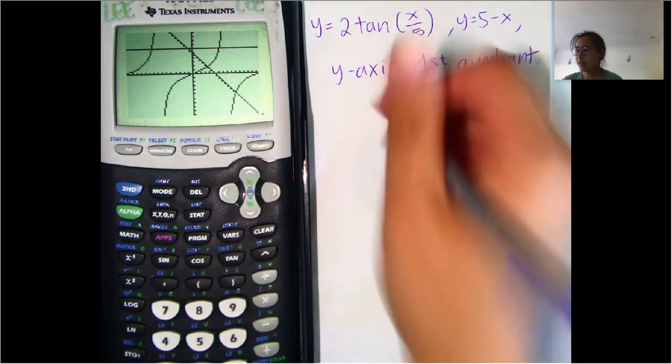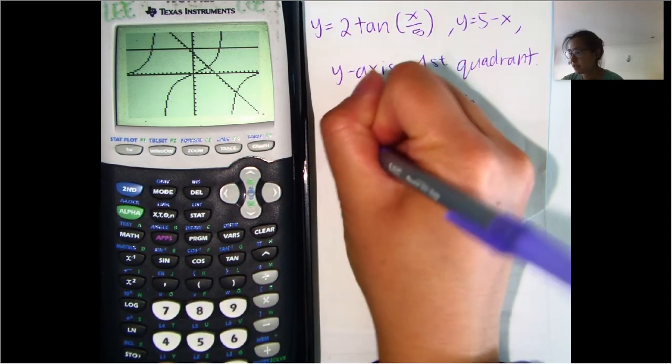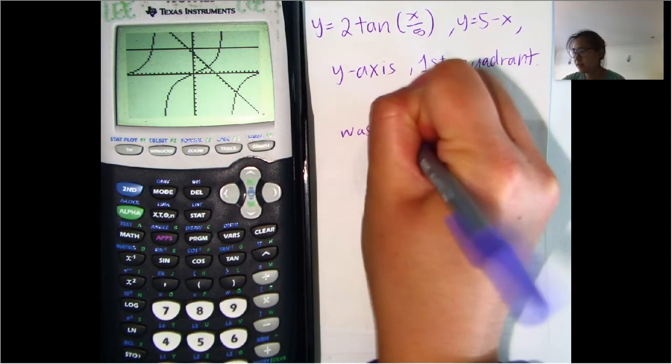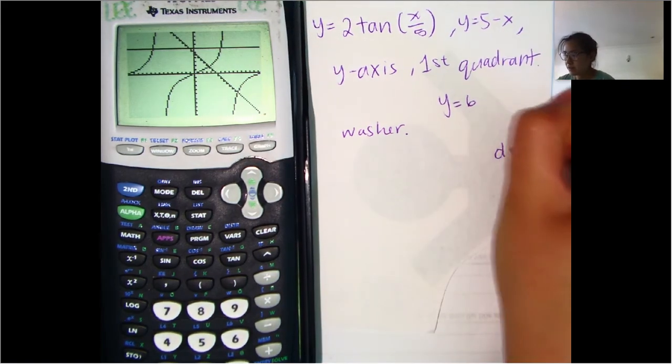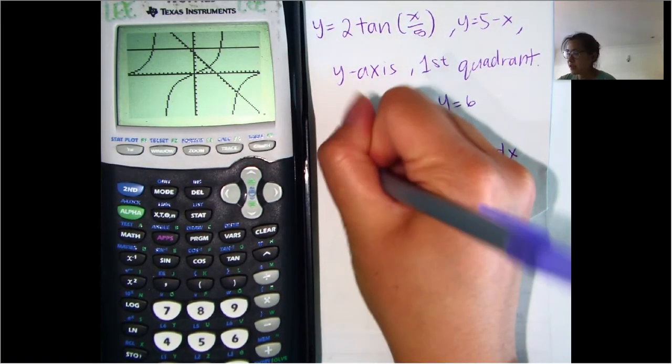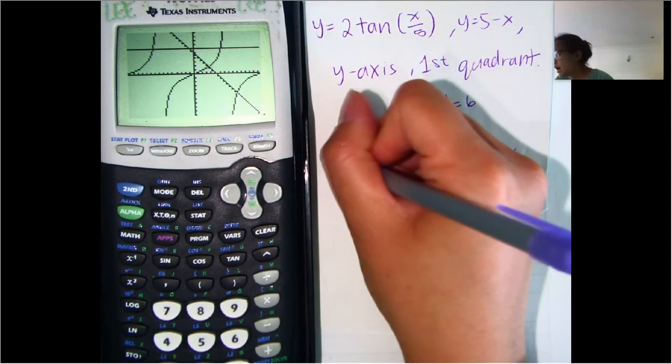Well, since it's not touching that means it's going to be a washer and we're revolving around a horizontal line. So that means it's going to be DX and then the integral and then it's going to be pi.